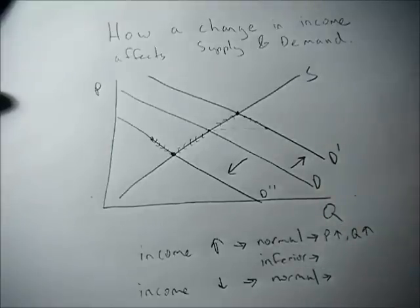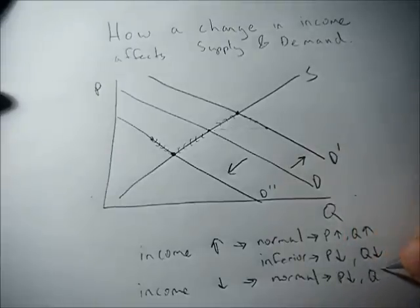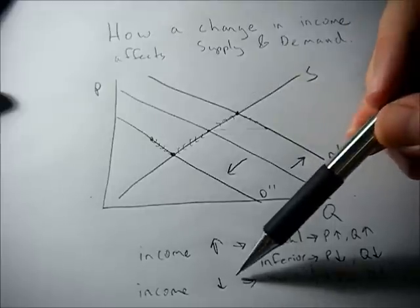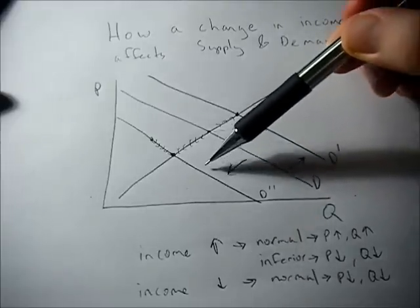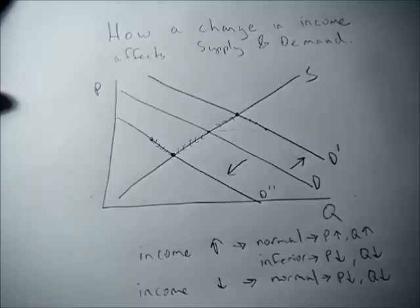Income goes down and it's normal, we can afford less of it. Equilibrium price and equilibrium quantity drop.